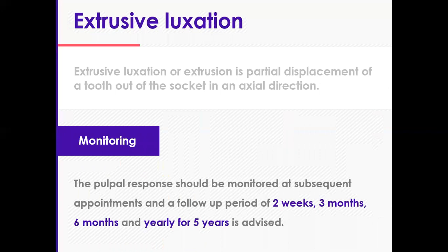For monitoring, assess the pulp, the periodontal structures, and the root, just as you would for all traumatized teeth. Take a baseline reading with pulp sensibility testing when the patient returns. Personally, I get them back after a week if possible, or sometimes 48 hours depending on the patient and situation. At all subsequent appointments, check the pulpal status. The timing should be: two weeks for splint removal and pulp test, then three, six, and twelve months, and then annually for five years.